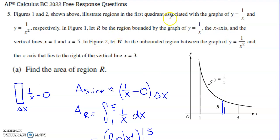The figures illustrate regions in the first quadrant associated with graphs of one over X and one over X squared, respectively. In figure one, we're going to let R be the region in the first quadrant bounded by the graph of one over X, the X axis, and the vertical lines one and five. There's the graph of one over X, the X axis, vertical lines X equals one and X equals five. We don't need figure two and W in part A.